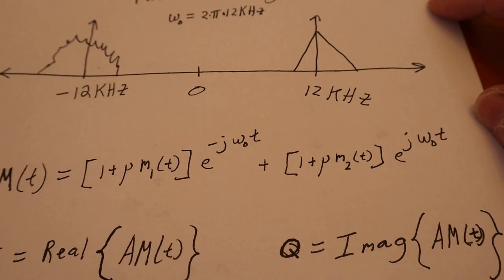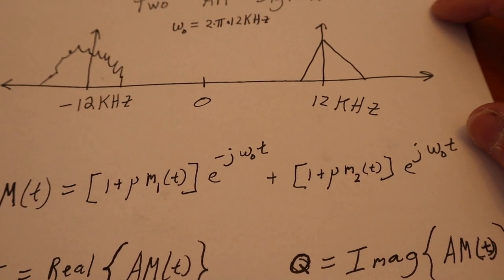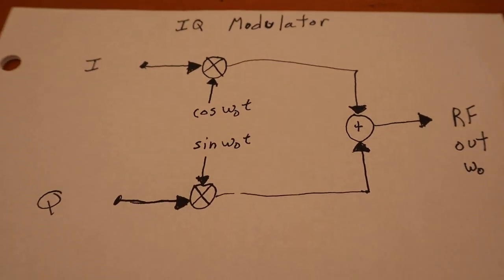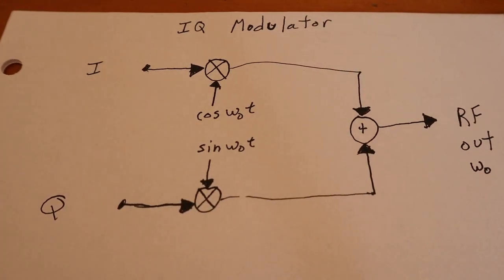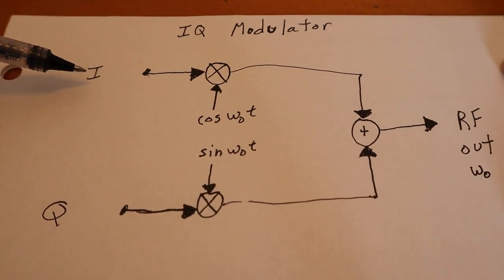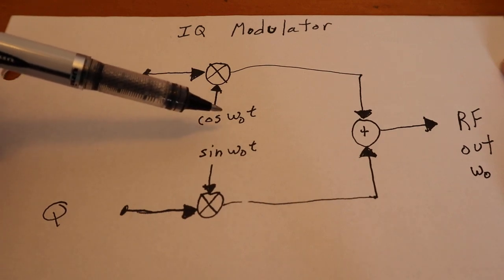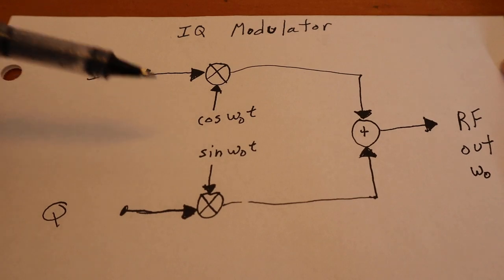So knowing that, how can we make this become a real world signal that you would transmit out your antenna? And the answer to that is right here. It's called an IQ modulator. And hopefully you can see that. So we have our I term here multiplied by the cosine omega zero. So this omega zero, in this case, would be whatever the carrier frequency you want.